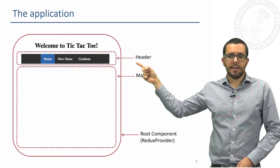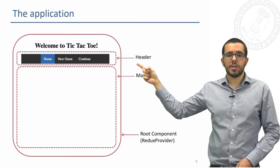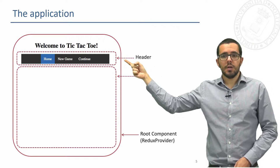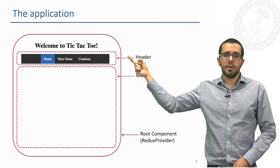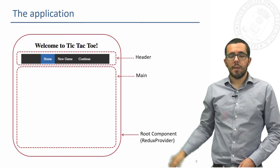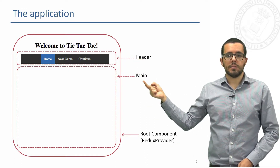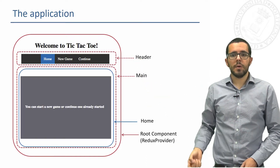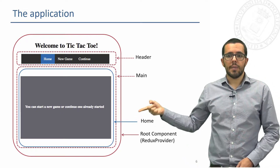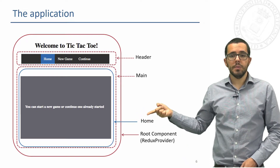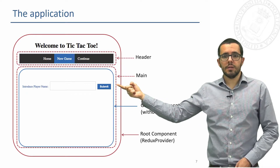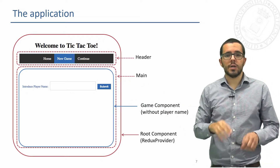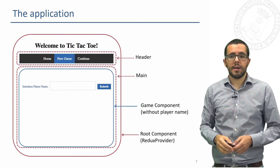Inside the Redux Provider we have this h1 here, but below it we have a header component where the user can choose between different navigation links: home, new game, or continue. And below it we have the main component, which will render either a home page or an input field for the user to fill in the player name.